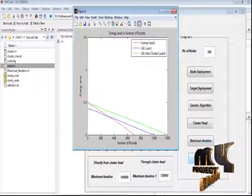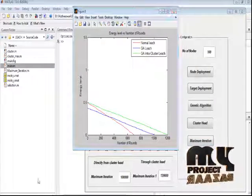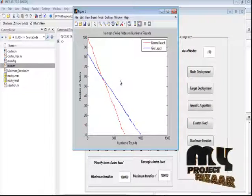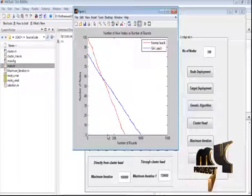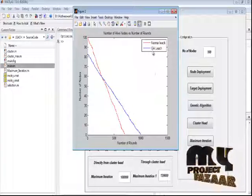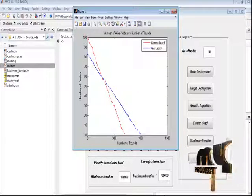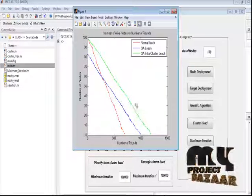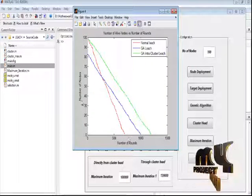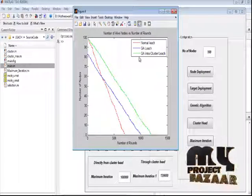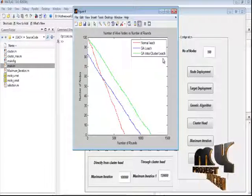This is the graph between number of alive nodes versus the number of rounds between normal LEACH and also GA LEACH. And this is the graph representation between number of rounds versus number of alive nodes between normal LEACH, GA LEACH, and also GA inter-cluster LEACH.